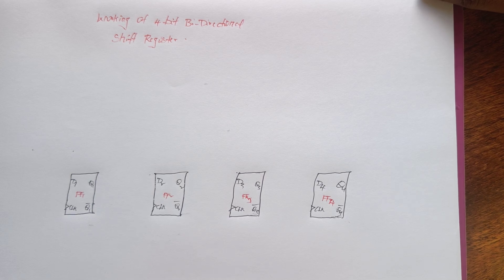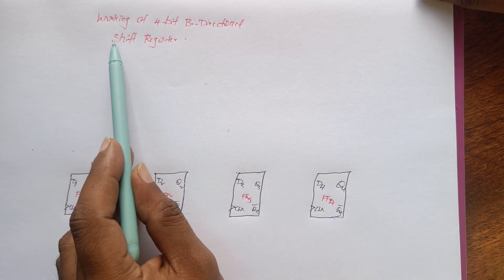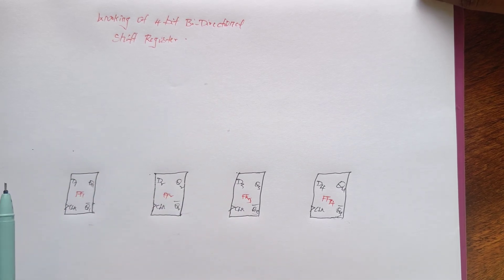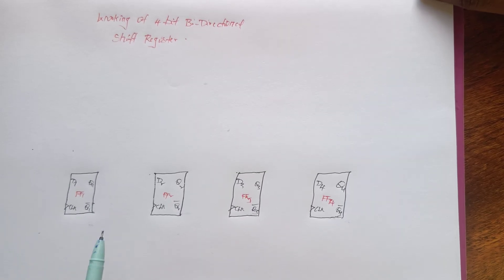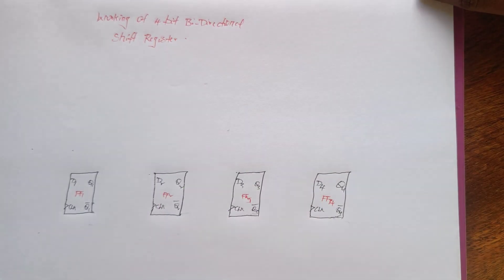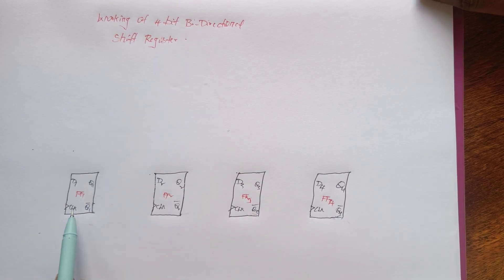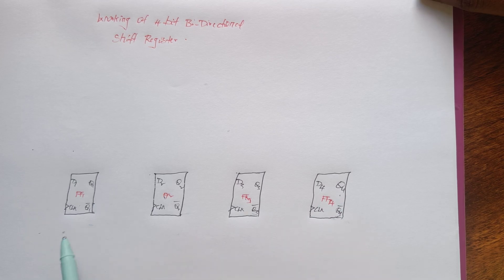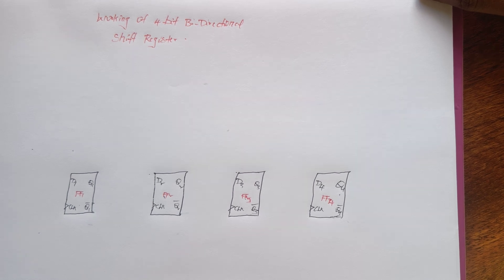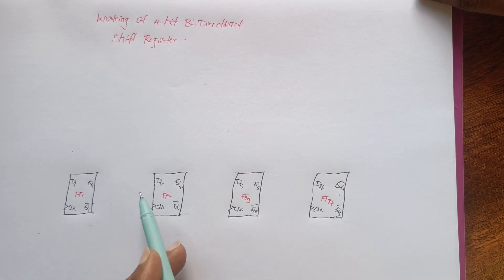The next topic is the 4-bit bidirectional shift register. Bidirectional means two directions — shift left and shift right — combined into a single circuit design. For a 4-bit register, we require four flip-flops. We are taking D flip-flops because D flip-flops simply transfer input data to the output: zero is zero, one is one.